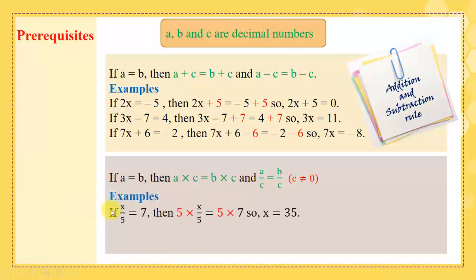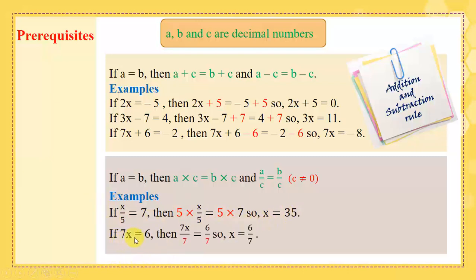Examples: if x over 5 equals 7, then 5 times x over 5 equals 5 times 7. Here we multiplied both sides by 5, so the left side becomes x and the right side becomes 35. If 7x equals 6, then 7x over 7 equals 6 over 7. Here we divided both sides by 7, so we get x on the left side and 6 over 7 on the right side, so x equals 6 over 7.